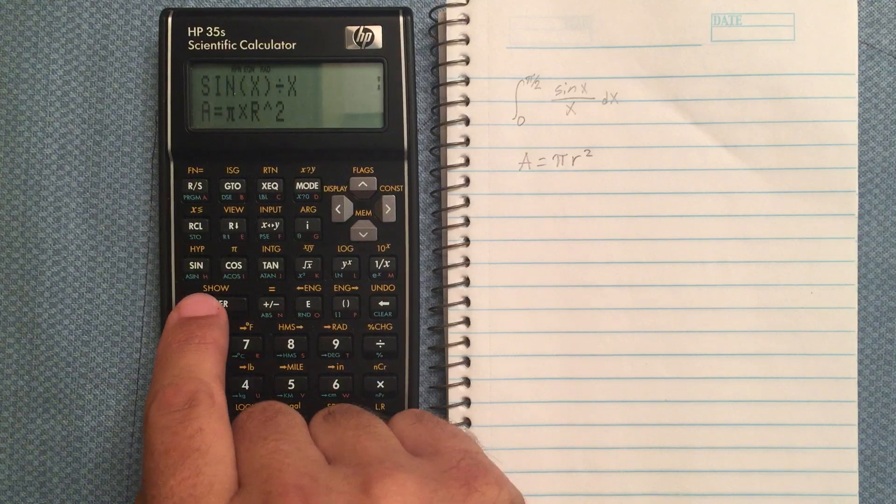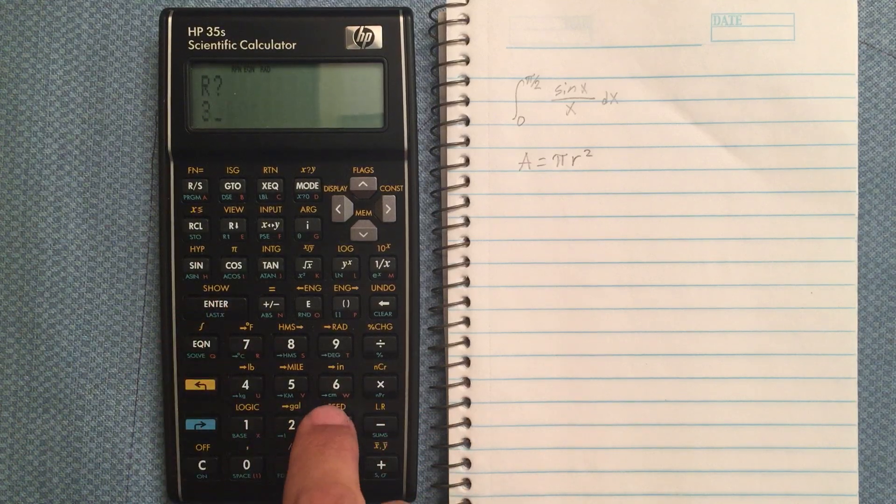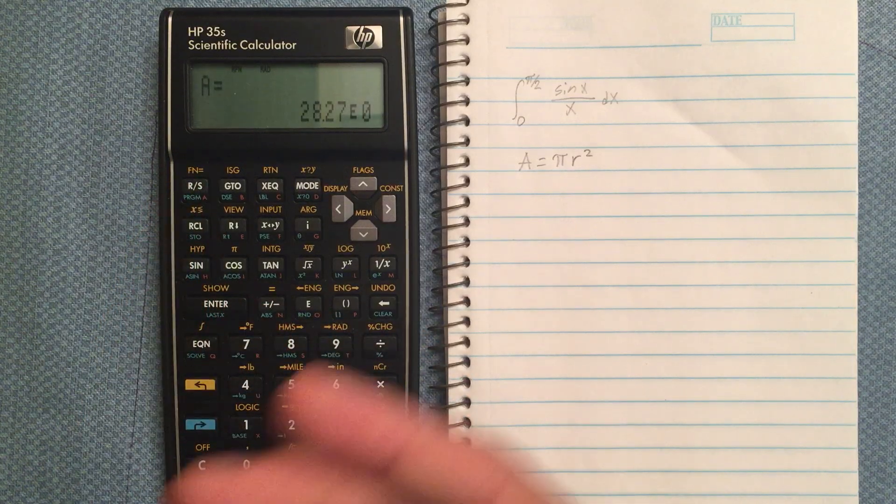Let's do it with a different value. So hit enter, let's do 3 this time. And we get the area for a radius of 3.